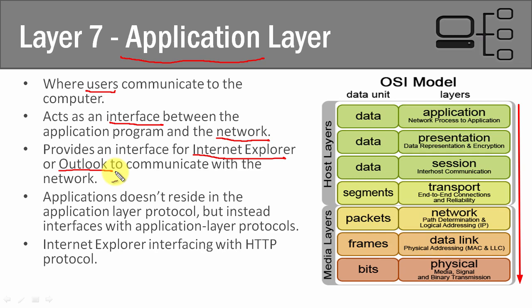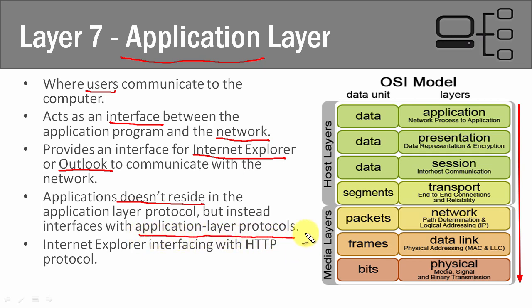One important thing to note about this layer is that the applications themselves don't reside in this actual layer; instead, they interface with application layer protocols. It's the actual application layer protocols that reside in layer 7. For example, HTTP is one of them, IMAP is another, and POP3 is another — both of those are for email.